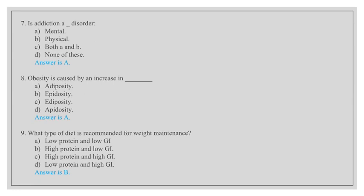Obesity is caused by an increase in adiposity, epidosity, adiposity, epidosity. Answer is A, adiposity. What type of diet is recommended for weight maintenance? Low protein and low GI, high protein and low GI, high protein and high GI, low protein and high GI. Answer is B, high protein and low GI.